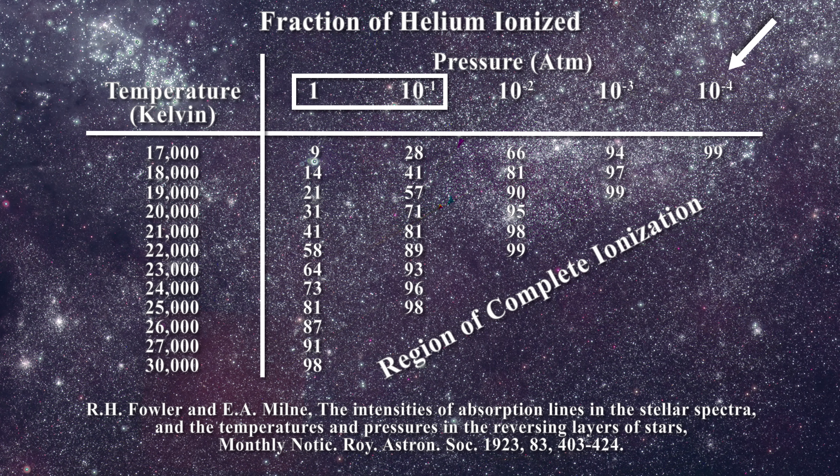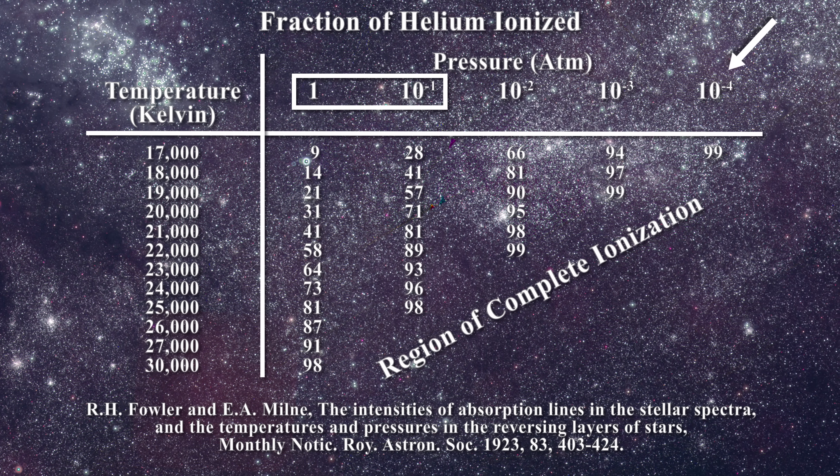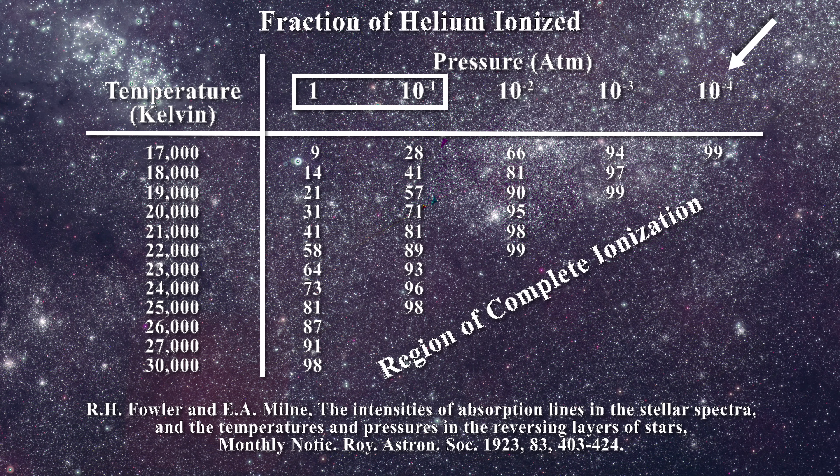Unlike Saha who had considered the minimum amount of material needed to form a line, these authors examined the point at which lines reached their maximum level in the stars as a function of star type.